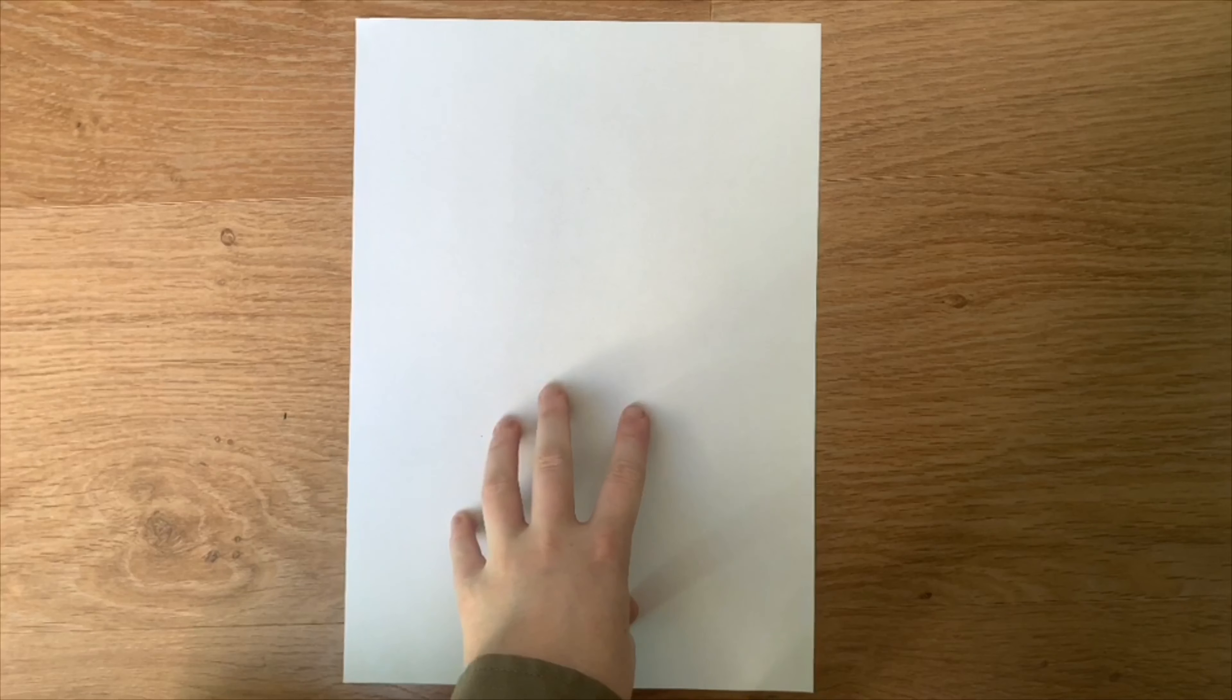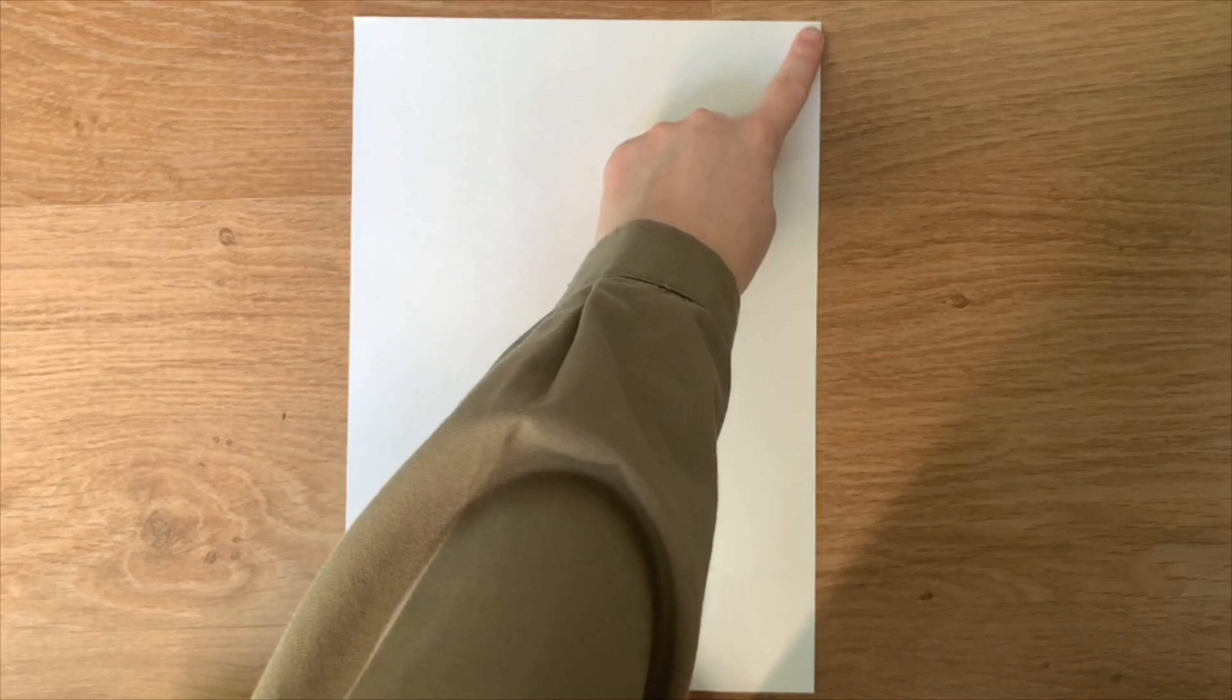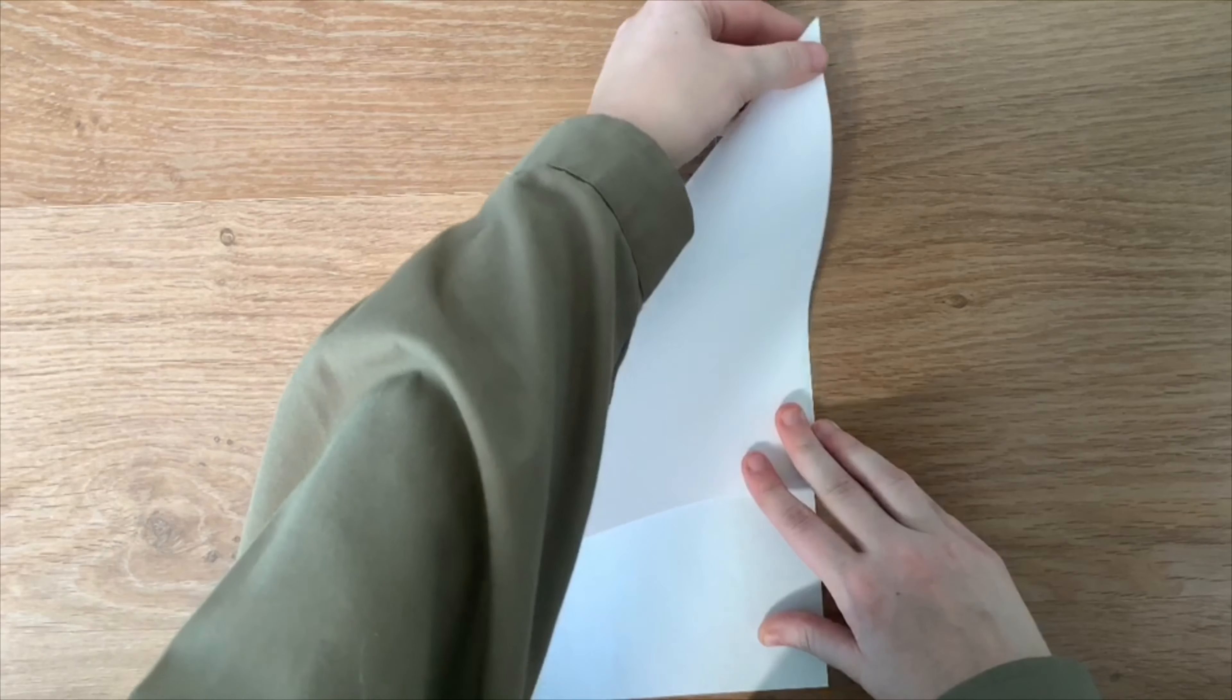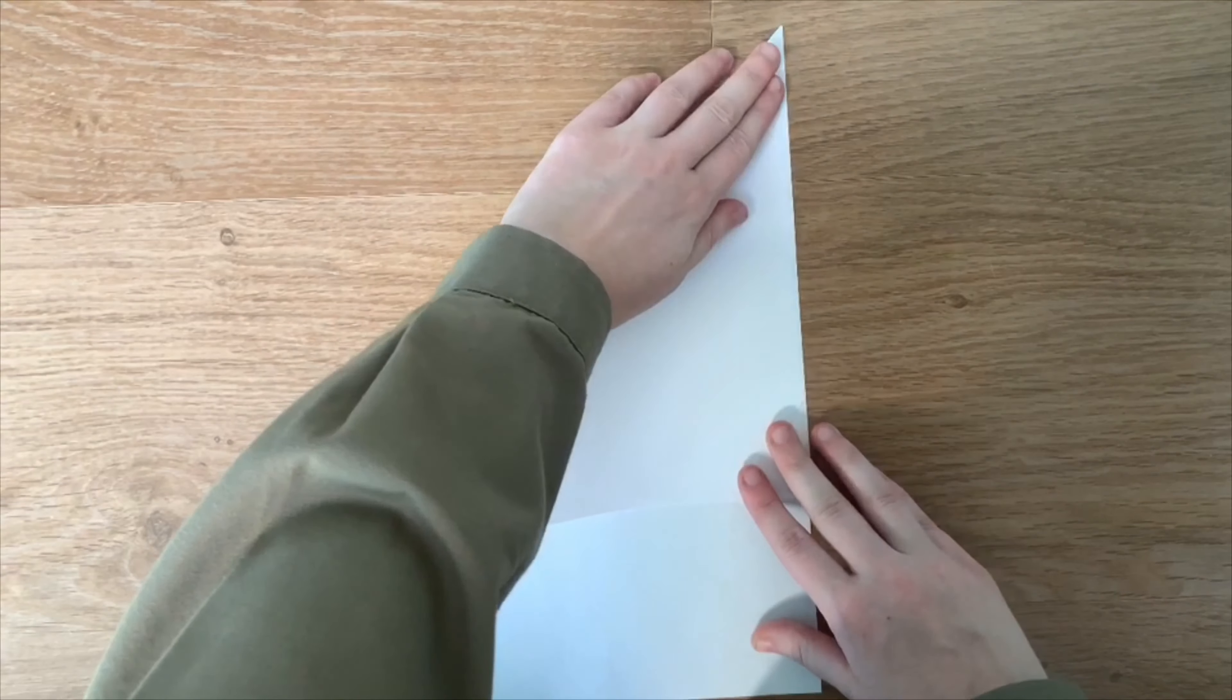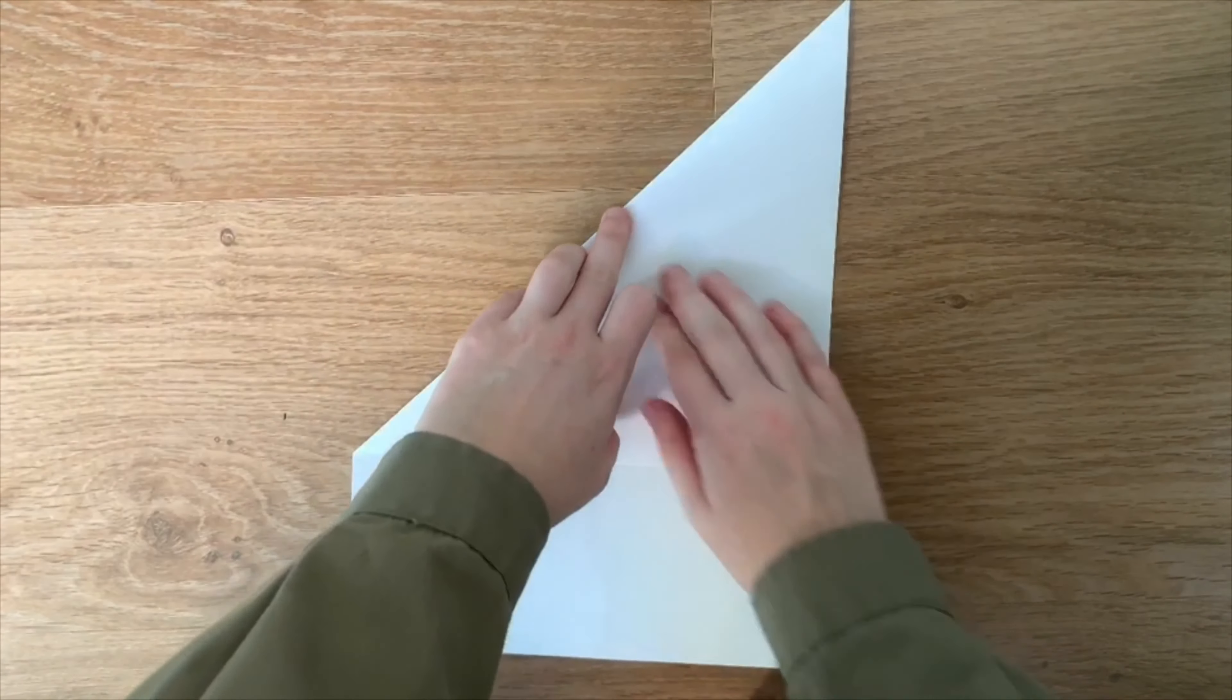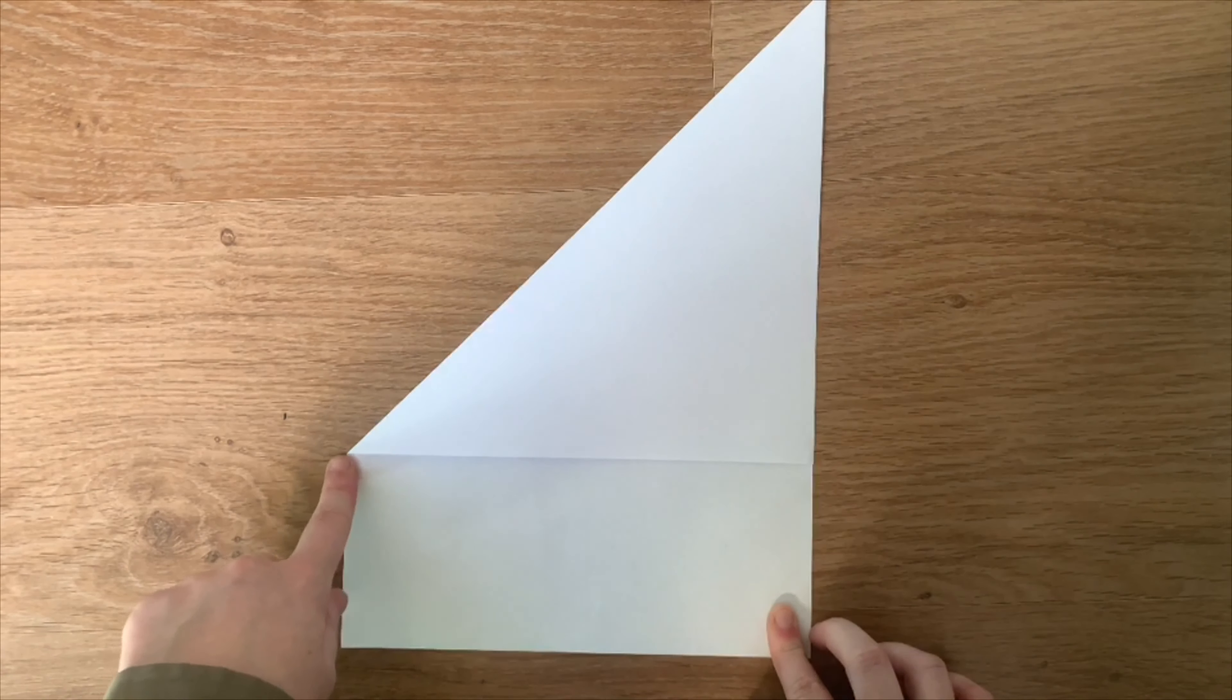To get started on all three origamis you're going to make a square out of your A4 piece of paper. To do that, take the top corner and make this edge align with this edge. Just like this. Get this top corner to fold in half, and then crease across the edge. When you have this shape, get rid of this by cutting it off with scissors.